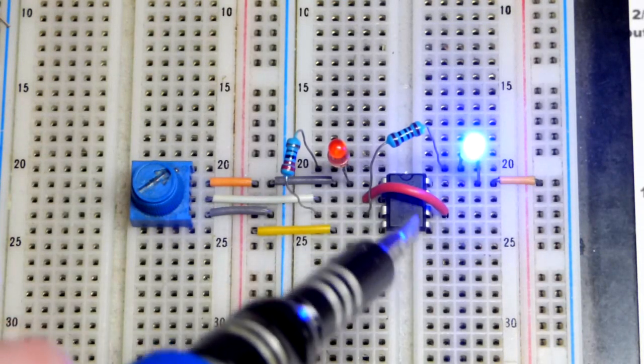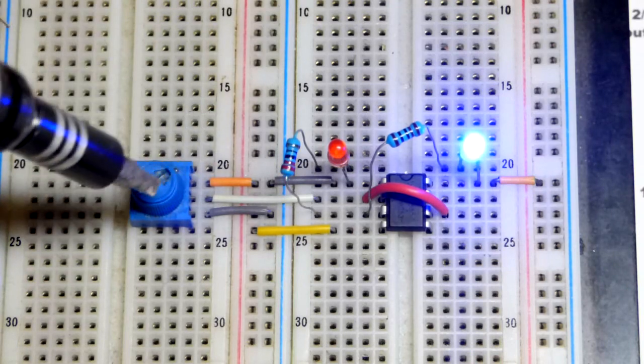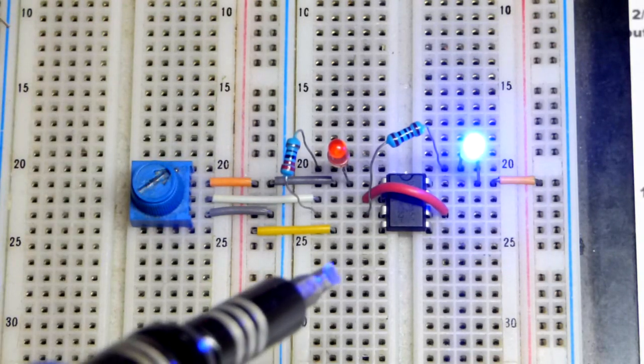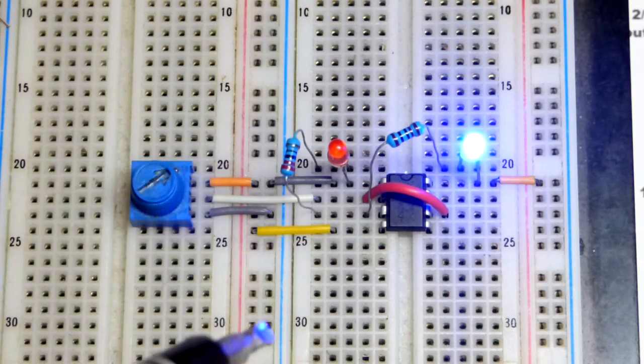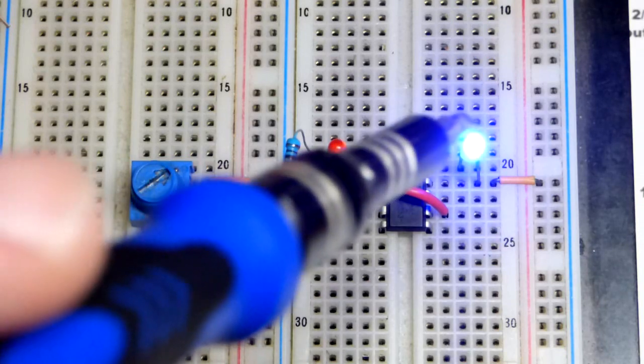In this video we wired up the 555 timer as an inverter. I've got the trim pot set to 6 volts to make the math easy. With positive supply, you can see the blue LED is lit up, which means we have a low output at the negative supply to light the blue LED.